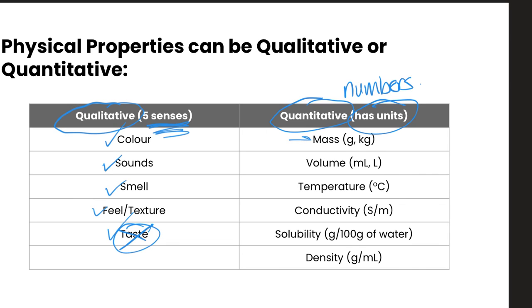And then quantitative, having numbers, some examples are things like mass, volume, temperature, conductivity which has these weird units of S/m, which is siemens per meter. It's just how it's measured and the units it goes with. Solubility has units of grams per 100 grams of water that it's dissolved in. Density might have units of grams per milliliter. So those are all examples of quantitative physical properties.